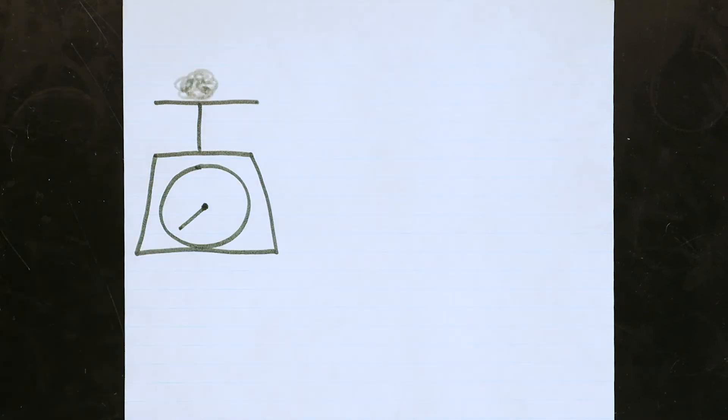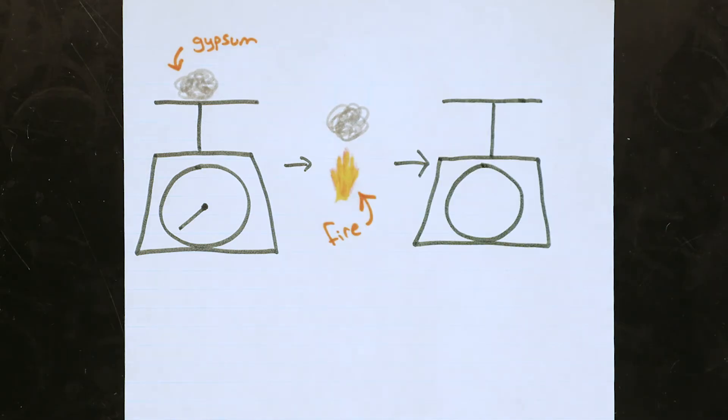We'll start by weighing how much gypsum we have, then we'll heat it in order to evaporate any water that would be present in the sample. Weighing again, we'll notice that our sample got significantly lighter. This new mass is the weight of the dry calcium sulfate, also known as anhydrous calcium sulfate, and the difference between the previous mass and the new one corresponds to how much water was lost.